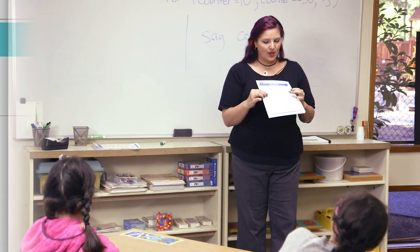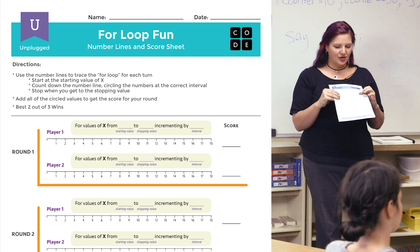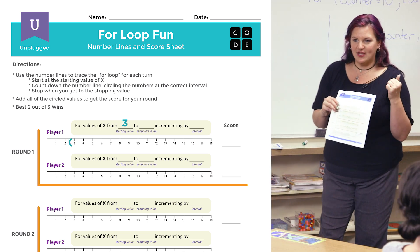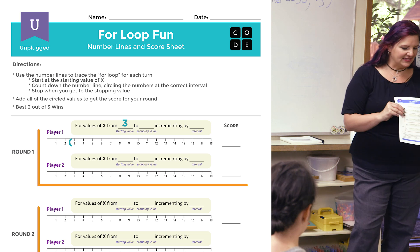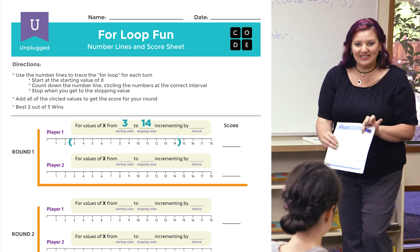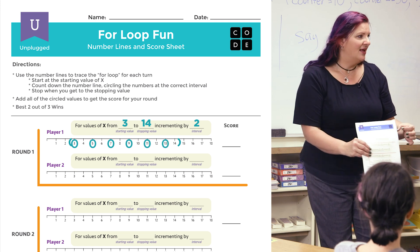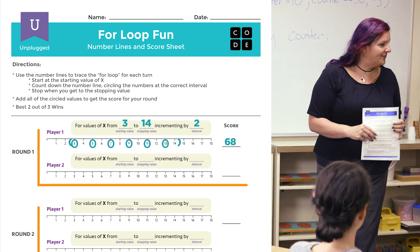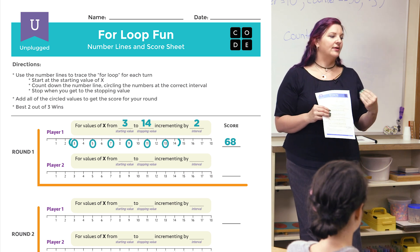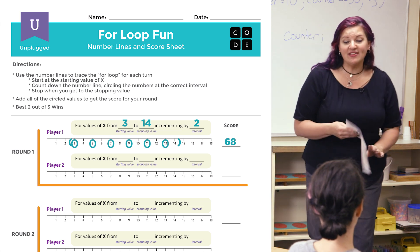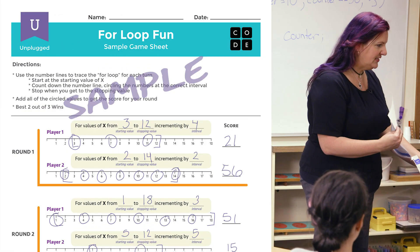It is a dice game. You've got this grid that you're going to play with a partner. You're going to roll one die and find out what your starting number is by the value of that die. Then you're going to roll three dice — or the same die three times — and add them all up, and that's going to be your ending number. Then you'll roll to see how many you count by. You go through and circle all the numbers, adding them up to get the highest score. If your counting number can't add up exactly to your ending number, you stop at the last counting number before you get there. There are three rounds to play, and there's an example if you want to see how it works.